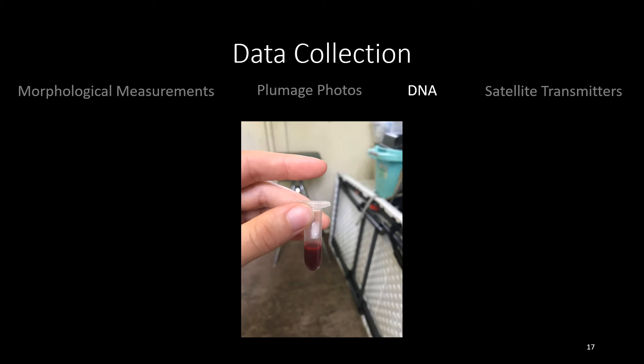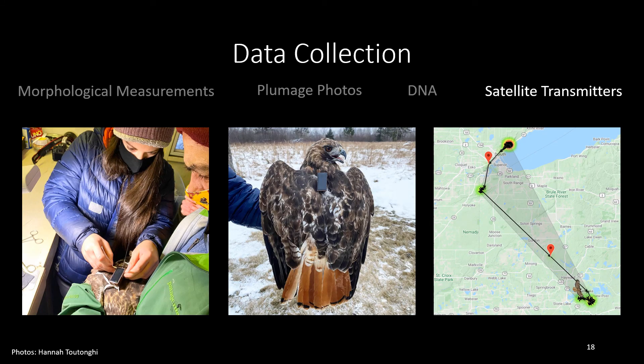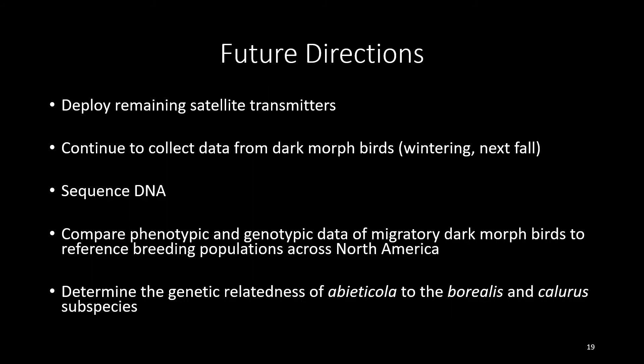This will hopefully provide us evidence on which subspecies each individual is more closely related to. Lastly, we are deploying four satellite transmitters on adult red-tailed hawks in order to determine where they're breeding. We are targeting two dark morphs and two light morph Abieticolas. So far we've deployed one transmitter on a light morph Abieticola bird. The next steps for this project include deploying our remaining satellite transmitters, collecting data from more dark morphs, sequencing our data, and performing comparisons of phenotypic and genotypic data from our migratory sample size and reference breeding populations in order to determine the subspecies origins of dark morphs migrating through Minnesota. We also want to be able to answer other questions such as genetic relatedness of Abieticola birds we sampled to other subspecies like Borealis and Chloris.